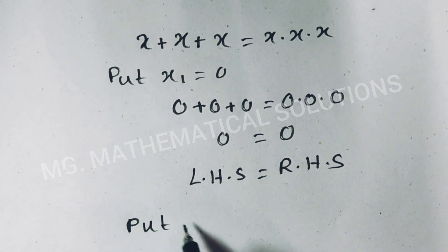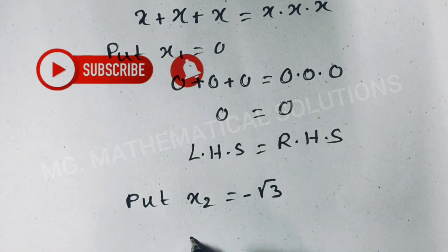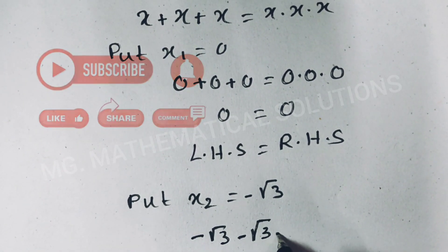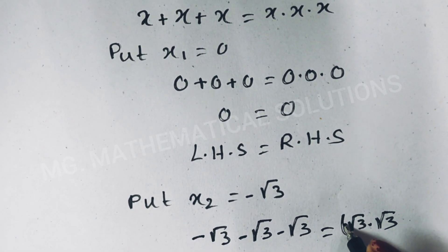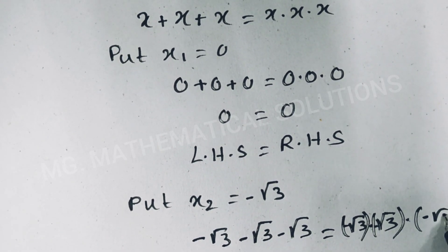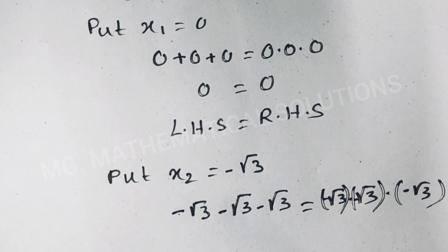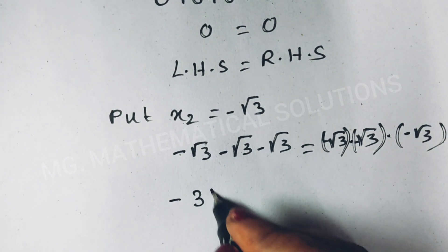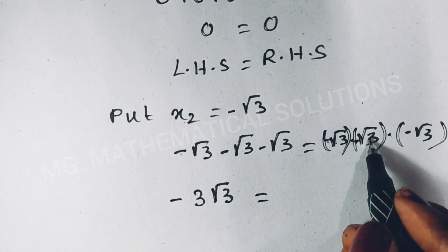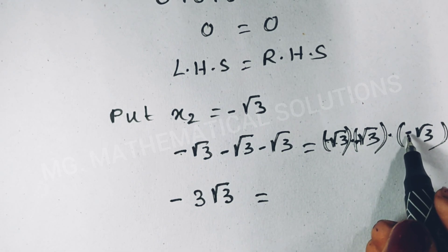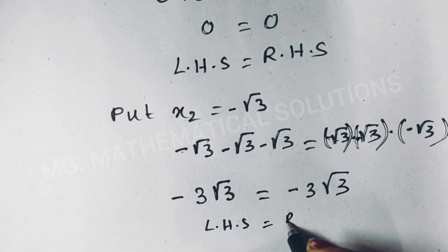Now put x₂ equals minus root 3. So minus root 3 minus root 3 minus root 3 equals minus root 3 times minus root 3 times minus root 3. That gives minus 3 root 3 on the left, and on the right, minus times minus is plus, then times minus gives minus 3 root 3. Left hand side equals right hand side.